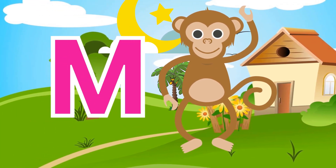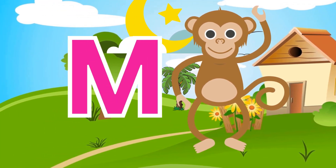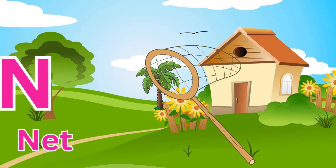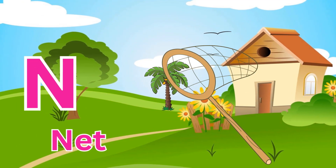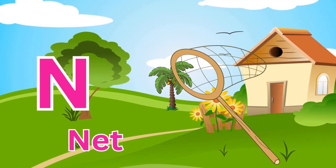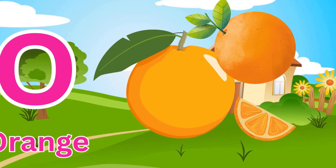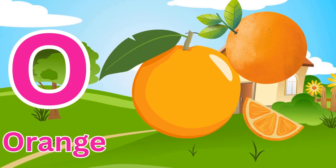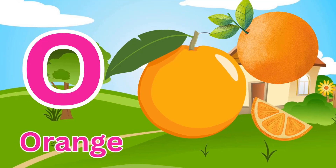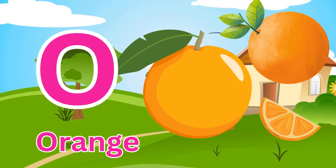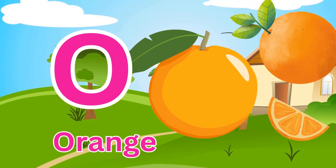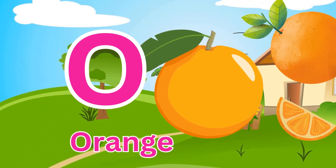N is for Net, N-N-Net. O is for Orange, O-O-Orange. P is for Pet, P-P-Pet.